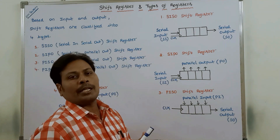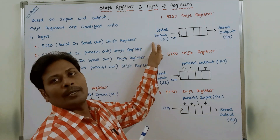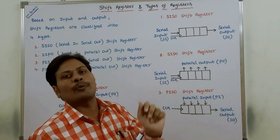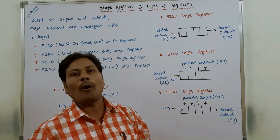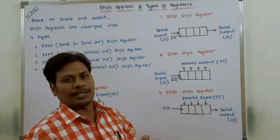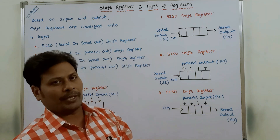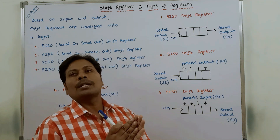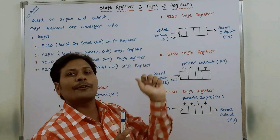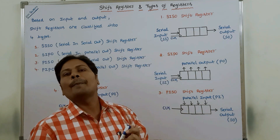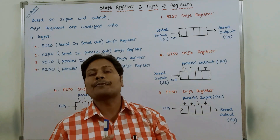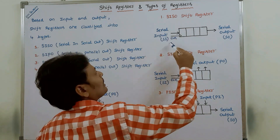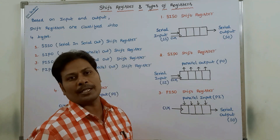A SISO shift register allows only serial input and produces only serial output. The serial input is entered into the shift register bit by bit and also leaves out from the shift register bit by bit in serial fashion.